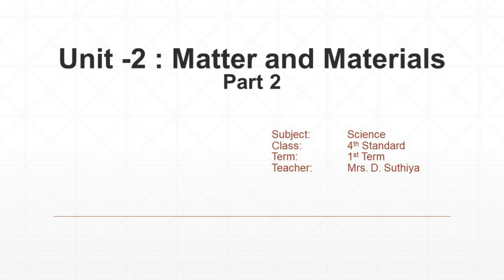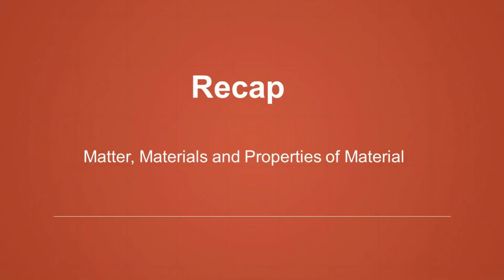In the previous class we learned about matter. Matter is any substance that has mass and takes up space by having volume. Then we learned about material. Material is a substance that can be used for making or doing something. Then we learned about the properties of materials, like hard and soft materials, shiny and dull materials, rough and smooth materials, flexible and rigid materials, and waterproof materials.